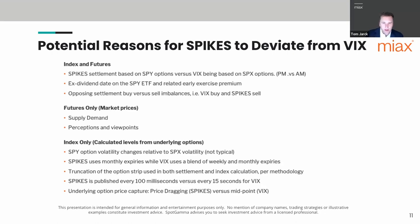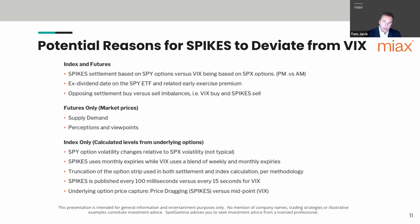On why Spikes may deviate from VIX — the index itself and the futures can sometimes differ. Starting with the last point: futures are tradable products where there can be supply and demand imbalances, widening the basis between the two. Theoretically, the Spikes index settles based on SPY options versus VIX which settles on SPX. On a typical monthly expiry, SPX options use AM settlement whereas SPY options are PM-settled, creating extra valuation between those two strips.